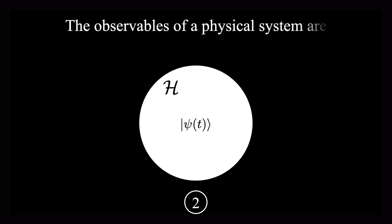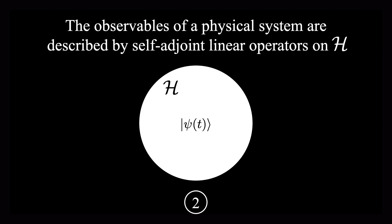This axiom says that the observables of a physical system are described by something called self-adjoint linear operators. And these operators act on the Hilbert space. So linear algebra is showing up here again. First, in the concept of an operator. And secondly, in the description of an operator as being linear and self-adjoint.